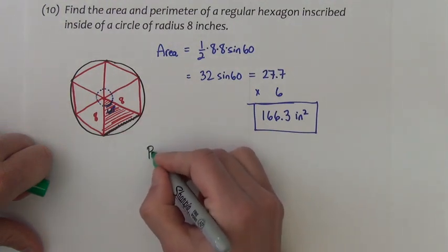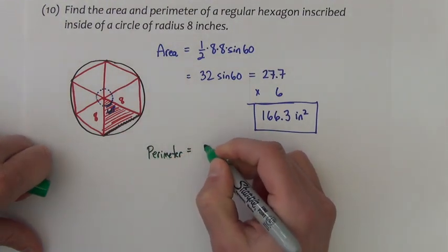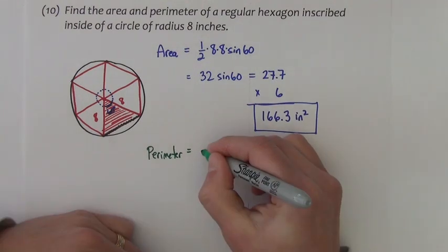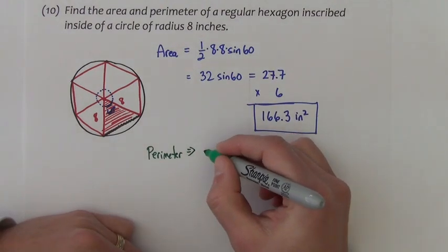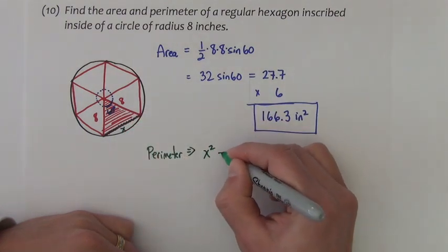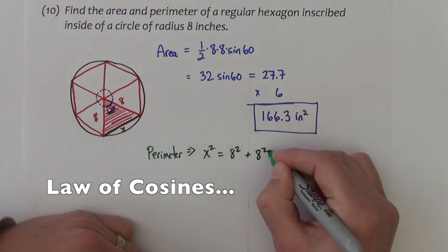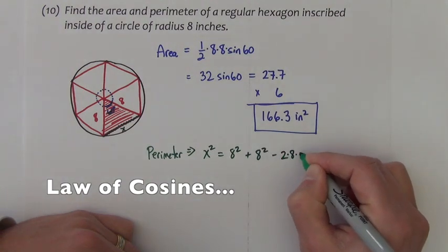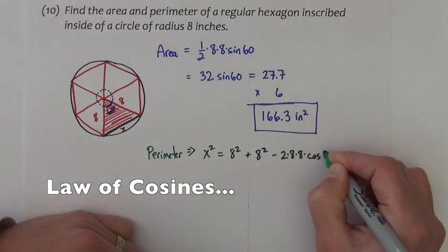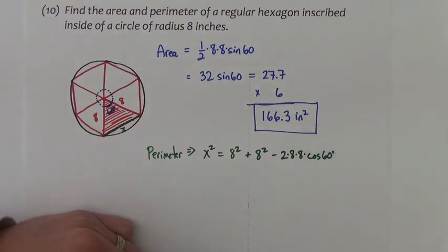So for the perimeter, let's call this a variable like x. So we have x squared equals 8 squared plus 8 squared minus 2 times 8 times 8 times cosine 60 degrees. I'm going to type all this into the calculator.